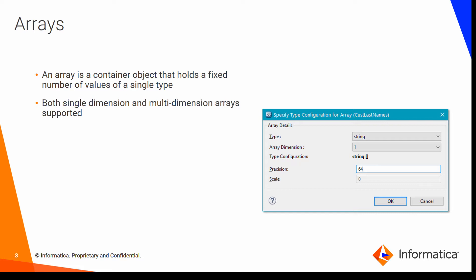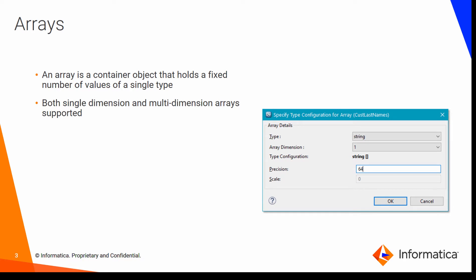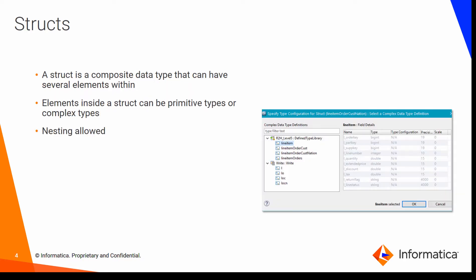Arrays. An Array is a container object that holds a fixed number of values of a given type. They can be both single dimension as well as multi-dimension. Arrays can contain primitive types or complex types.